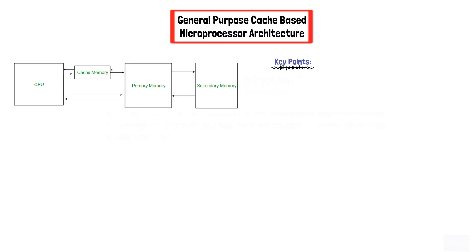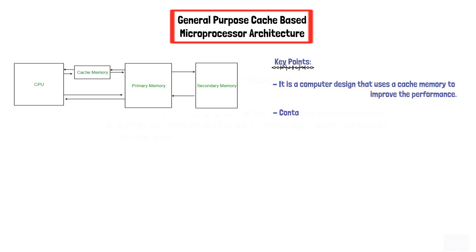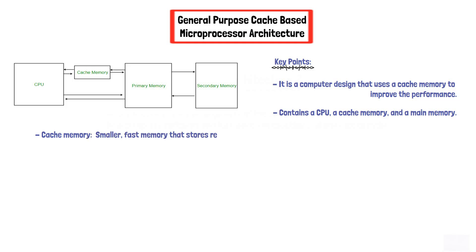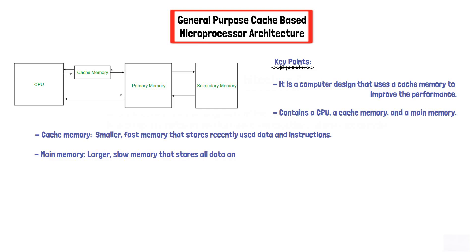The general purpose cache-based microprocessor architecture is a computer design that uses a cache memory to improve the performance. It contains a CPU, a cache memory, and a main memory. The cache memory is the smaller, fast memory that stores recently used data and instructions, while the main memory is the larger, slow memory that stores all data and instructions which are not available in cache.